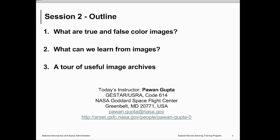Today, we are going to do satellite imagery for week 2, where we will learn how we can use simple visual imagery to learn about some of the air quality features in those images. The outline for today's session: first we will look at what true and false color images are and what we can learn from them. Then I will also provide two useful image archives, and if you like, you can follow along with me on those websites.